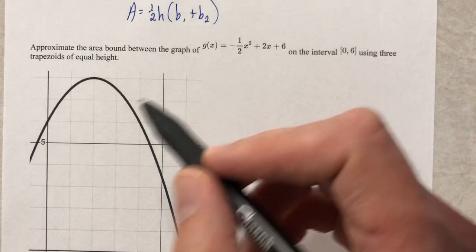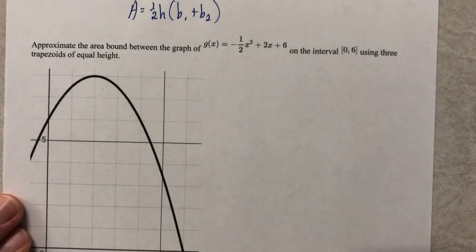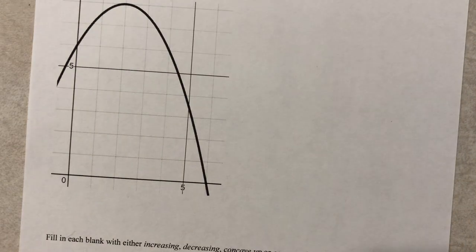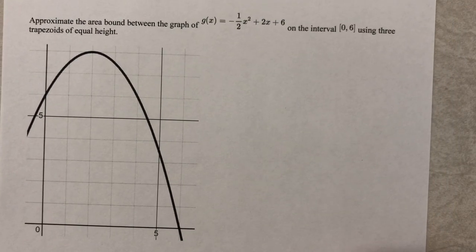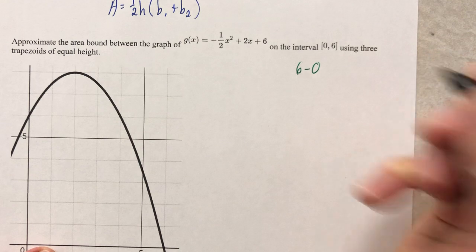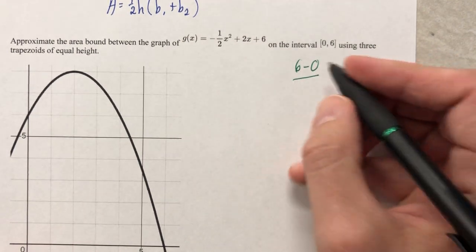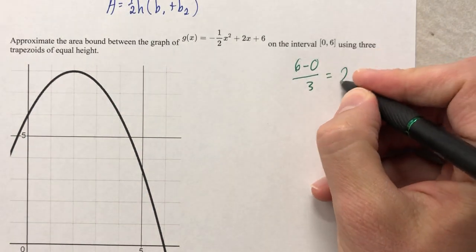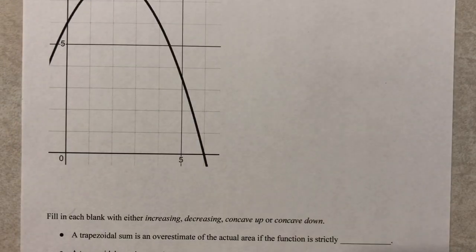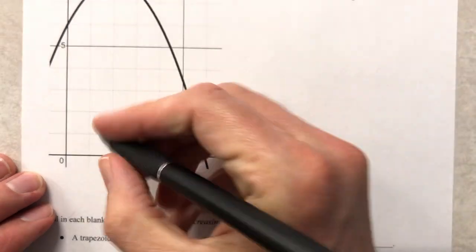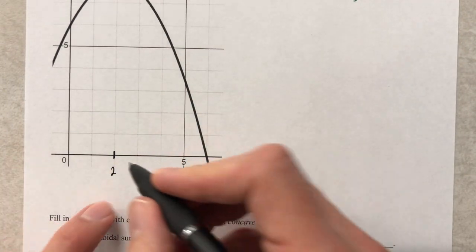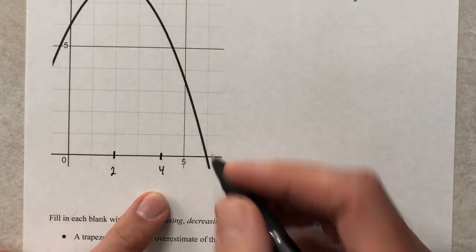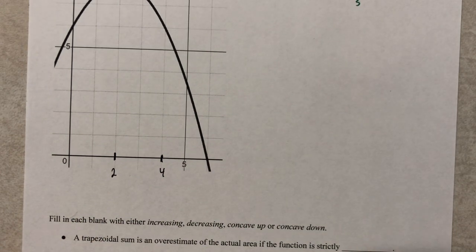On the interval from zero to six using three trapezoids of equal height. So we're gonna do the same situation we did when we found the width of an interval. The width of the interval was six, because six minus zero. But we have three trapezoids of equal height. We call them width if you want to. And so when we do that, we're gonna have two. So what we're really gonna do is have a trapezoid that goes from zero to two, and a trapezoid that goes from two to four, and a trapezoid that goes from four to six. All right, here we go.